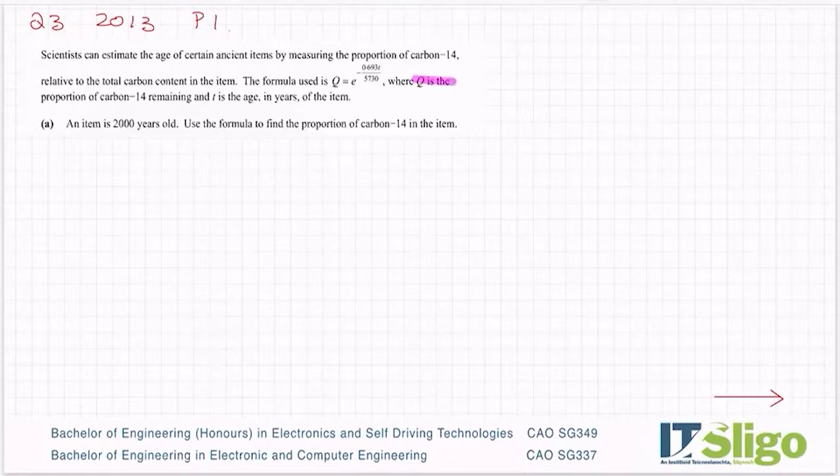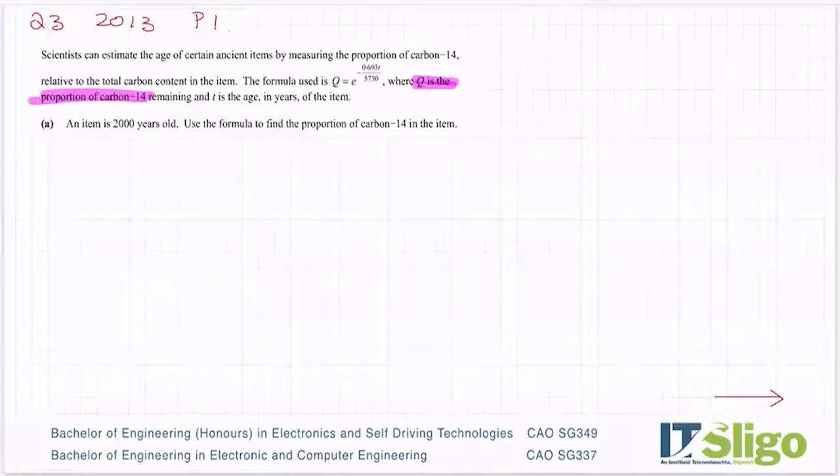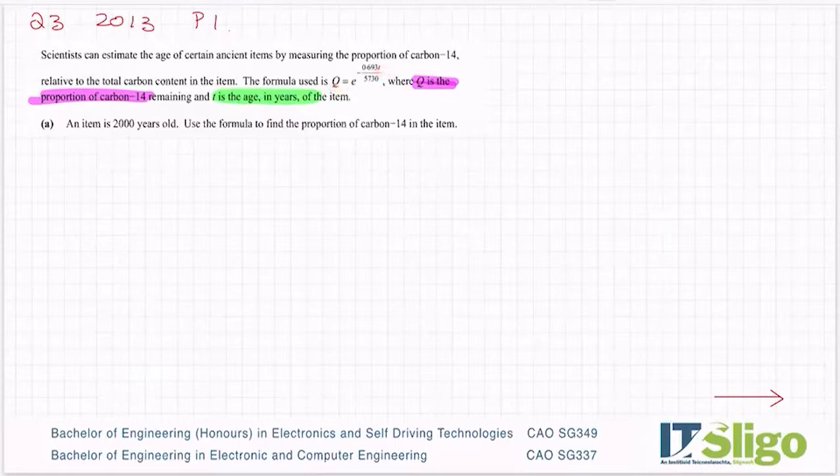Let's highlight some important stuff. Q is the proportion of carbon-14 and T is the age in years. Those are the only two variables in this formula, Q and T.